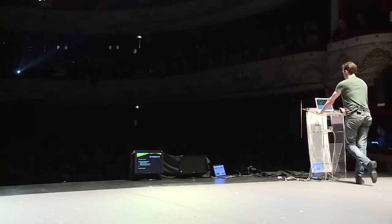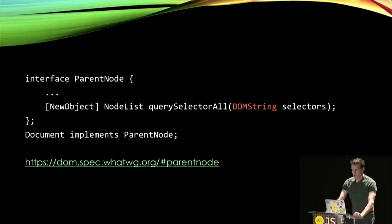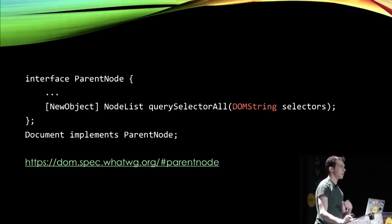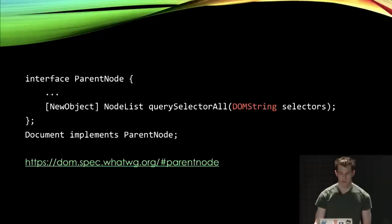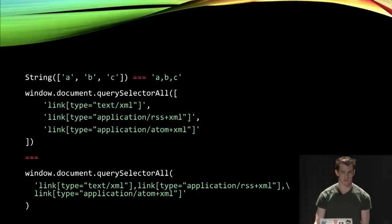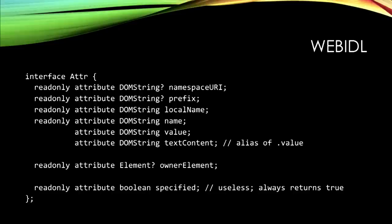So I went and read the spec. The thing I notice is that querySelectorAll is spec'd to take a DOMString — which to us mere mortals is just a JavaScript string. But the important thing to realize is that when the spec says it takes a DOMString, that doesn't mean it only takes a DOMString — it means it converts whatever you pass to it into a string. So the behavior makes sense: when you convert any array to a string, it just joins it with commas. So when you pass an array to querySelectorAll, it joins the selectors with commas, and hey, that actually works.